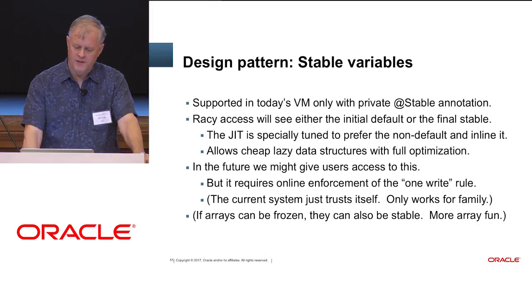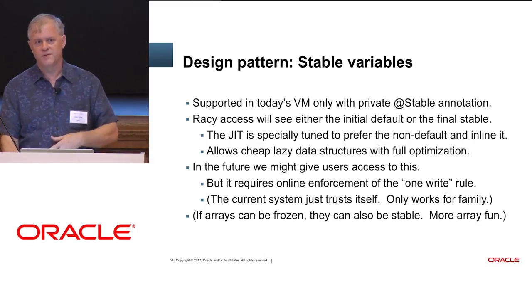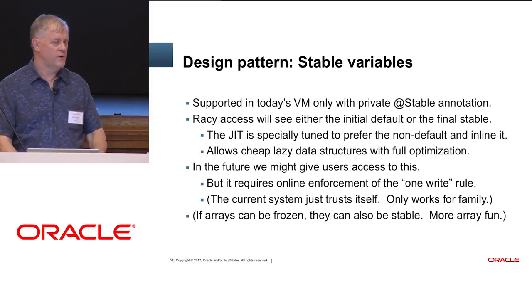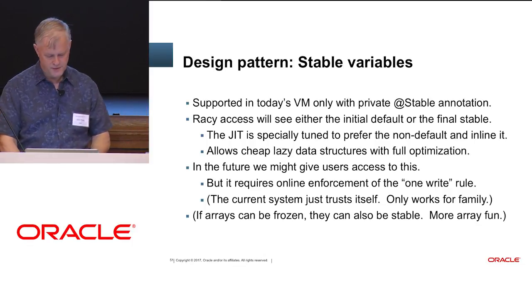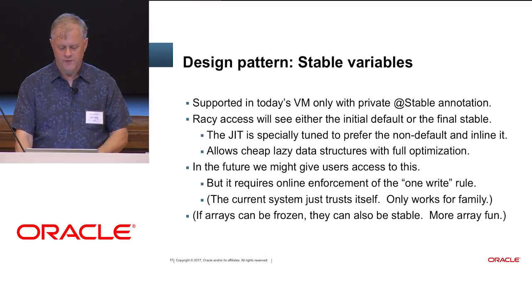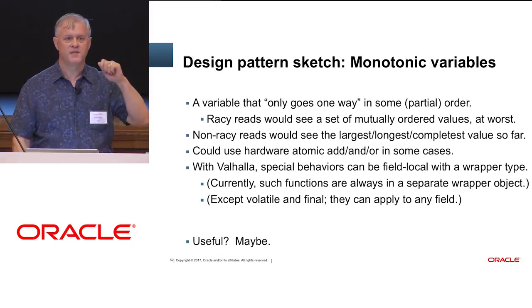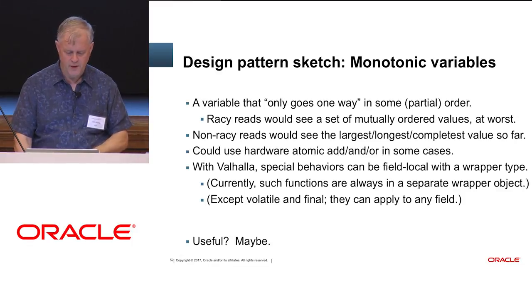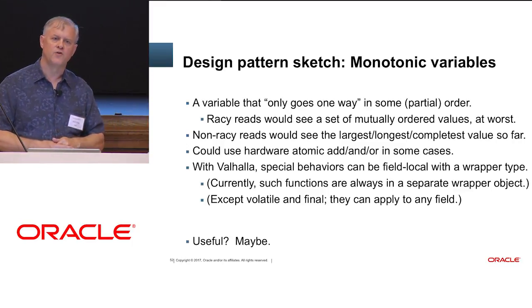Stable variable: it's something we use internally. It's a variable where you can see either the default value or the one write to the value, and it's okay if you see either one. Eventually you hopefully see only the written value, but it's okay if you see the default. This is a super useful concept inside the VM. Right now it's for family only because there's no mechanical checking that it's used properly — if given out to everybody, it would be abused by black hat hackers looking to introduce race conditions. Arrays can be stable as well as frozen. Monotonic variables: variables that only count up, so you can make conclusions about their state. I think there are interesting things we can do in this area to build new kinds of abstractions based on controlled state changes.